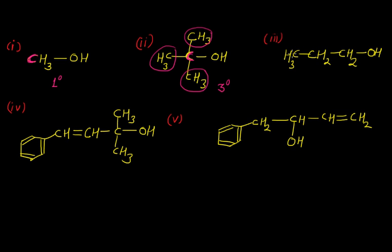In example 3, we look at the sp3 hybridized carbon where the OH group is attached. One hydrogen atom gets replaced with an ethyl group. Don't confuse this with example 1: in example 1, all three hydrogen atoms are present making it primary, and here, one hydrogen atom is replaced by an alkyl group, which also makes it a primary alcohol.